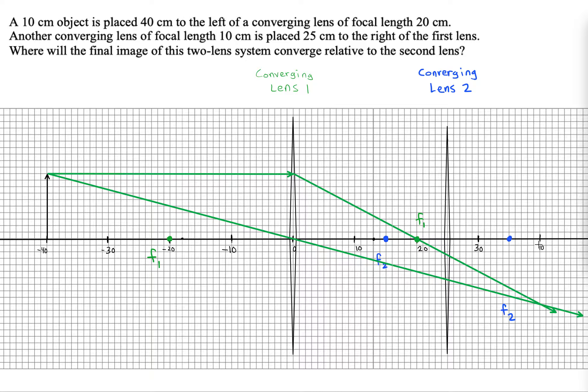So it looks like our first image is formed at 40 centimeters. Normally it would be a real image, but the problem is we have a lens between lens 1 and this image. So the question is, would light beams really pass through that image? And the answer ends up being no.